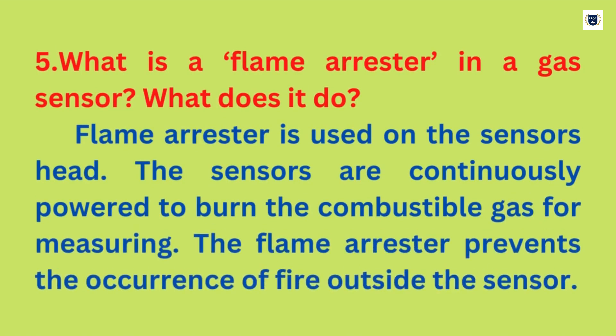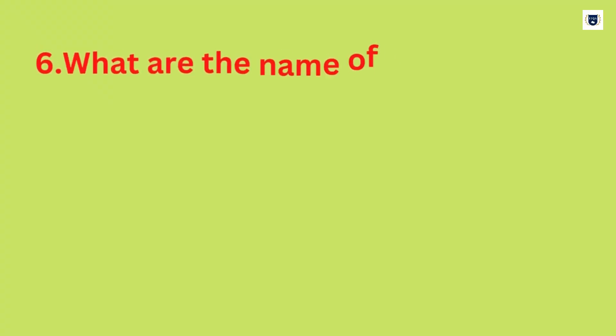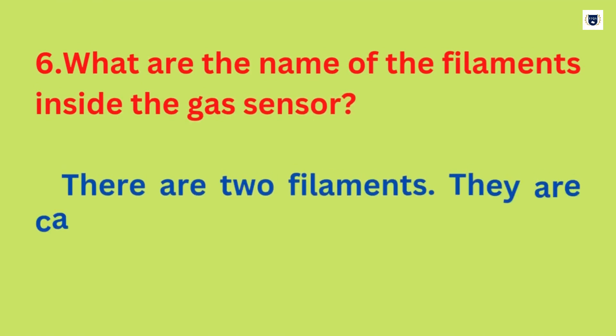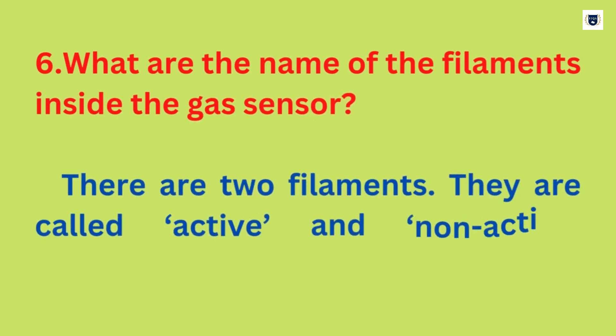What is a flame arrestor in a gas sensor and what does it do? The flame arrestor is used on the sensor's head. The sensors are continuously powered to burn the combustible gas for measuring. The flame arrestor prevents the occurrence of fire outside the sensor. There are two filaments inside the gas sensor — they are called the active and non-active filaments.